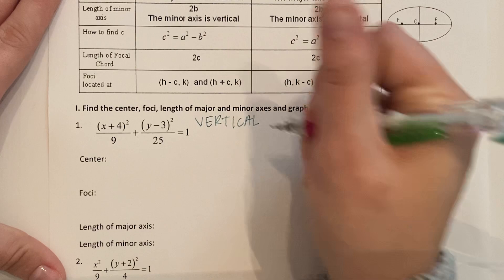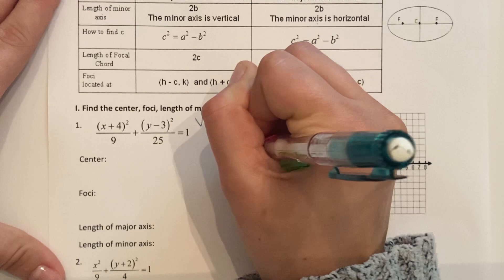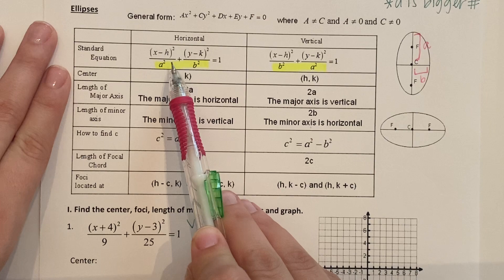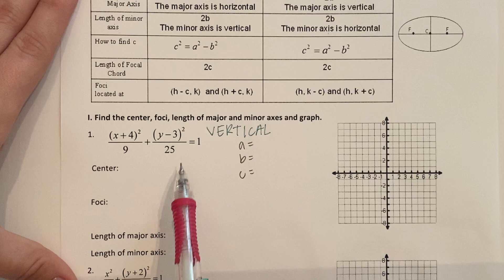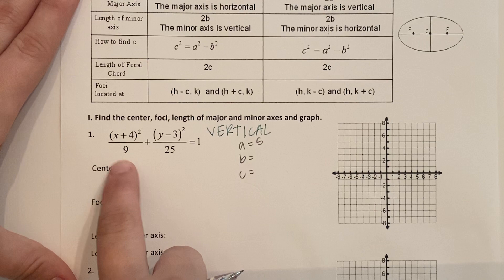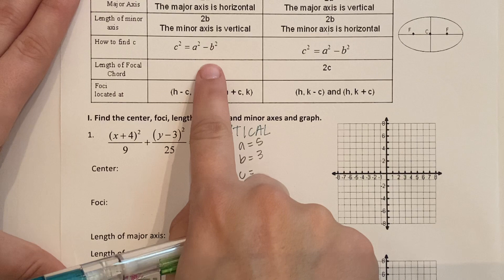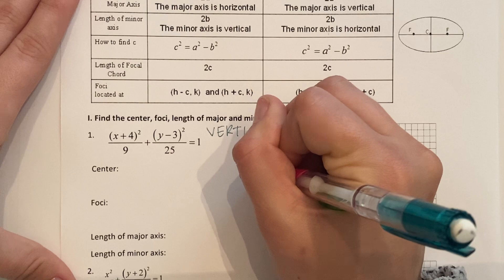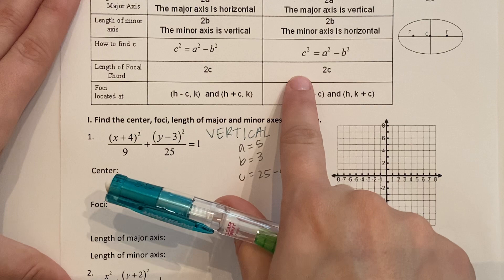So let's take some notes here before we solve all these things and graph. Let's figure out what A, B, and C are. Okay now remember the numbers under these in the denominators are already squared. So A is the bigger number so that comes from 25. But A is not 25. What is A going to be? Good. 5. If this is B squared that means B is 3.